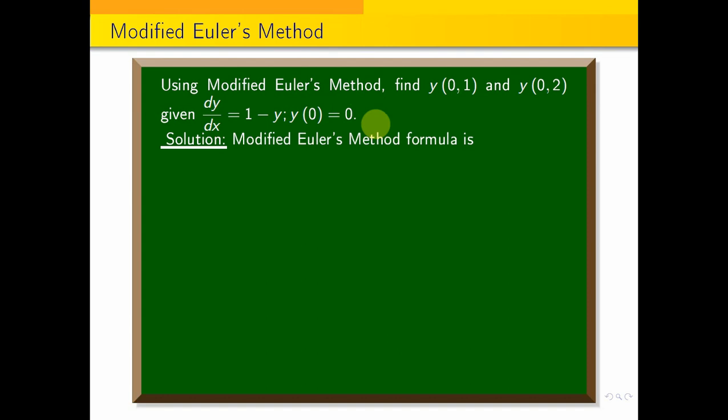So, the modified Euler's formula is y_{n+1} equals y_n plus h times f of x_n plus h by 2, y_n plus h by 2 times f of x_n, y_n. In this, N value we use. N starts from 0, 1, 2, 3, etc. This is the general formula for modified Euler's method.